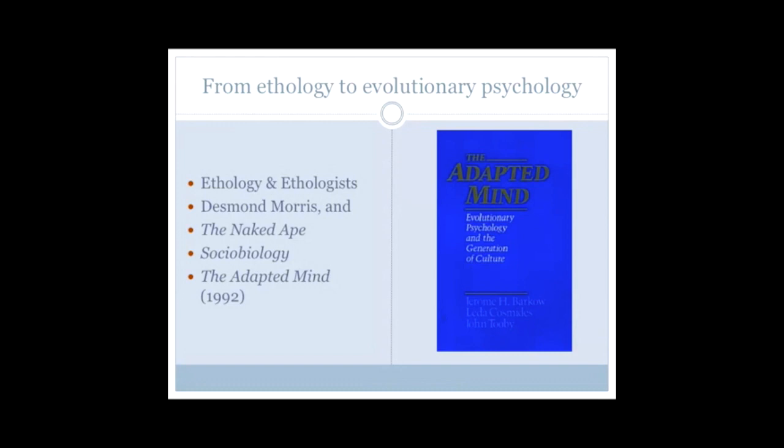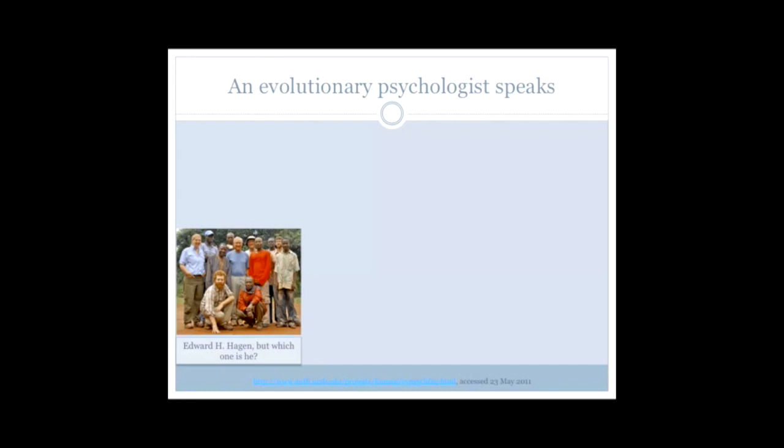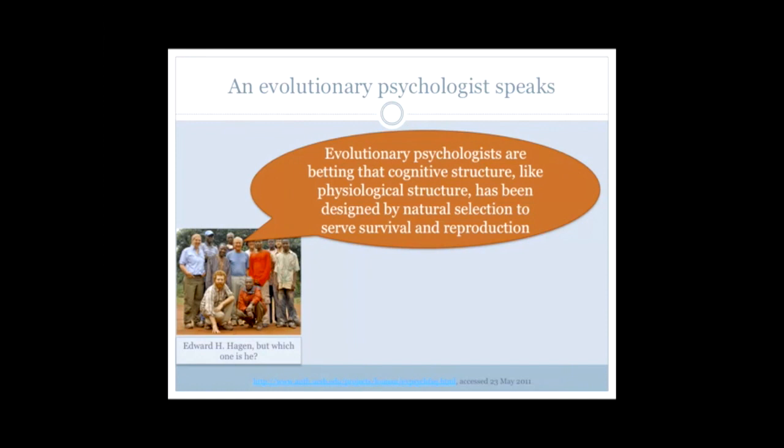So what are the basics of evolutionary psychology? How does it work? Let's take the work of the respected Edward H. Hagen here on a field trip. I haven't been able to identify which one of the fellas he is in that group. Maybe the one with the red beard. I do hope so. Or maybe he's the slightly elder man. Evolutionary psychologists are betting that cognitive structure, like physiological structure, has been designed by natural selection to serve survival and reproduction.